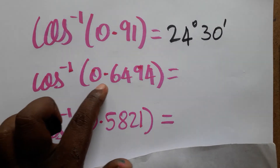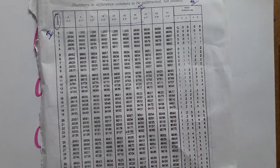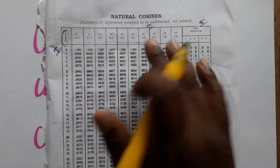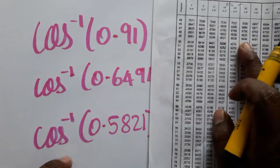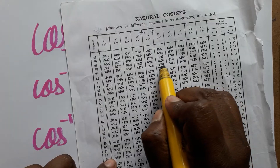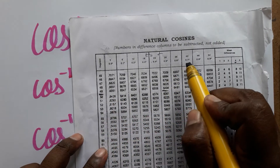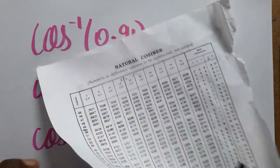Second, cosine inverse of 0.6494. I am using only the cosine table. The value 0.6494 comes on the second page of the table, from 1 degree through to 90 degrees. Searching through the column, I find 0.6494, which gives 49 degrees.